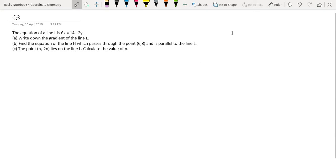Hi, in this question, we are given that the equation of a line L is 6x equals 14 minus 2y. And in part A, we are asked to write down the gradient of the line L.